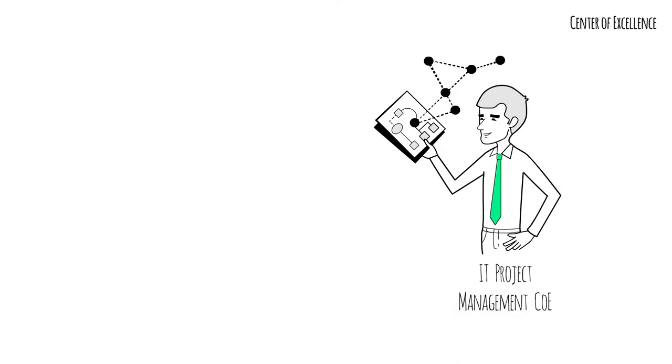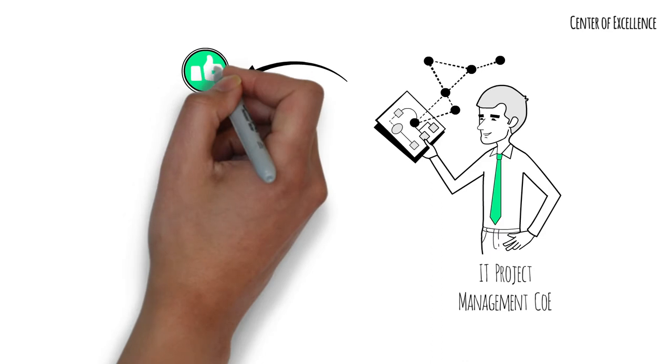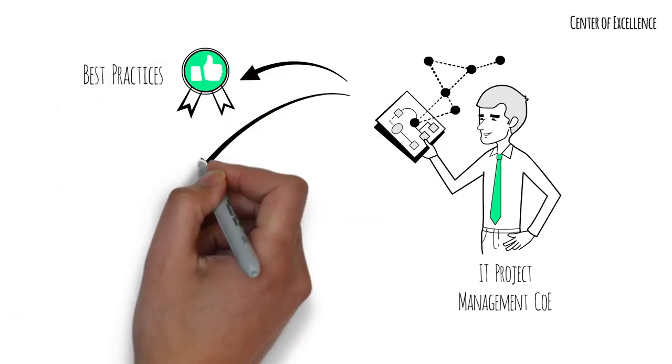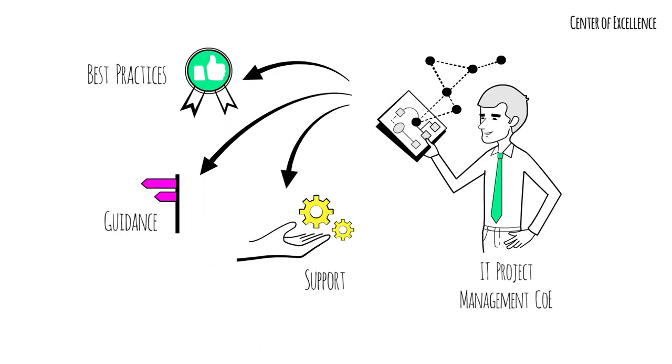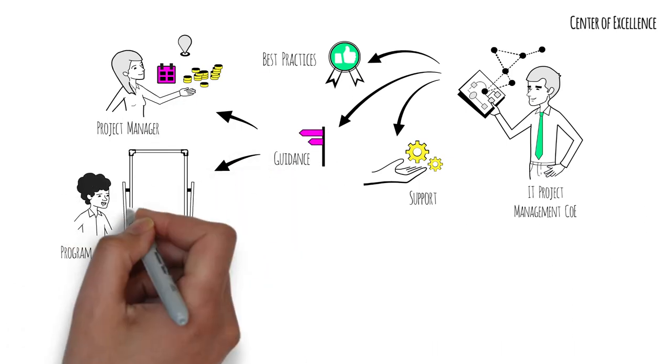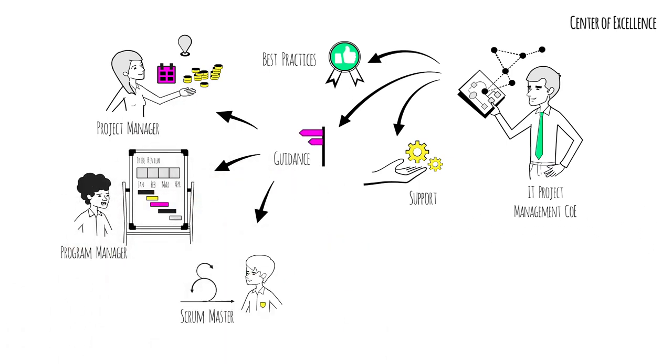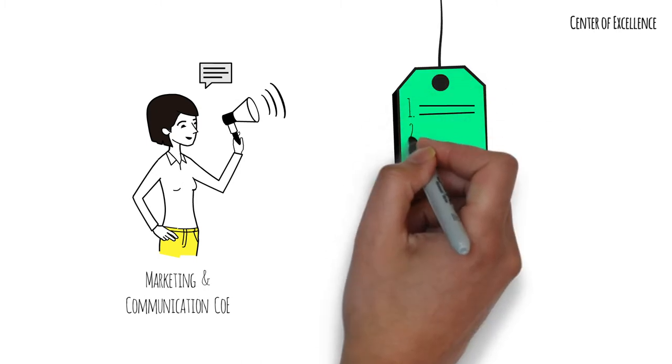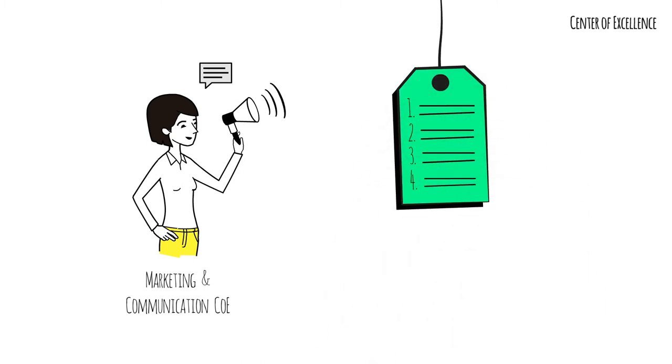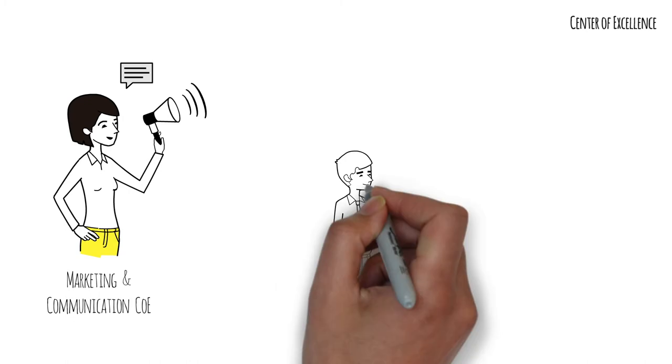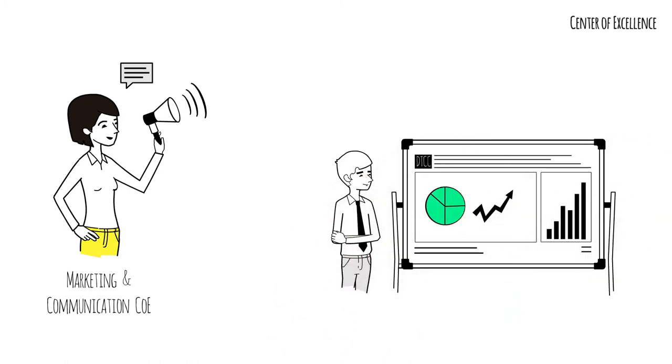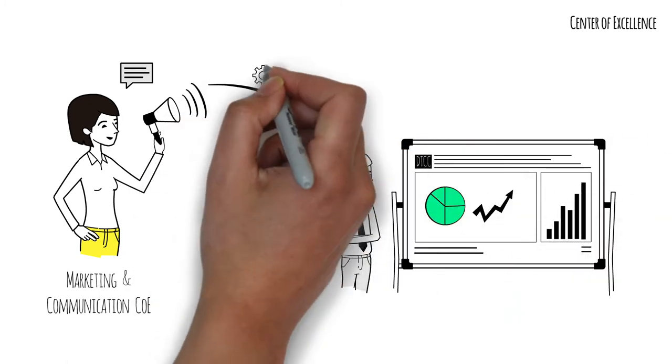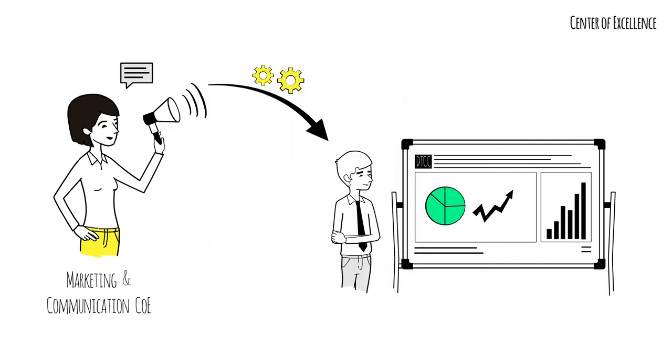For example, the IT Project Management COE is responsible for providing best practices, guidance and support for project managers, programme managers and scrum masters. And the Marketing and Communication COE sets the branding guidelines for the entire organisation. If you've ever used a DTCC branded PowerPoint template, you've been supported by the Marketing and Communication COE.